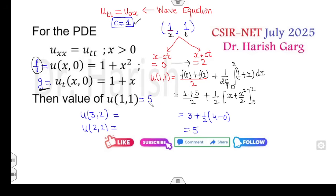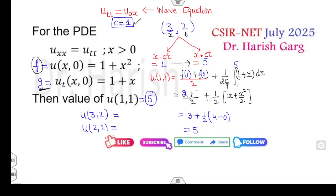So u(1,1) = 3 + 2 = 5. The answer is 5. Similarly, if someone asks for u(3,2): x − ct = 3 − 2 = 1, x + ct = 3 + 2 = 5. Then compute f(1) = 2, f(5) = 26, and integrate g from 1 to 5. After calculation you get the required answer. You can compute u(2,2) or whatever options are given in the paper in the same manner.